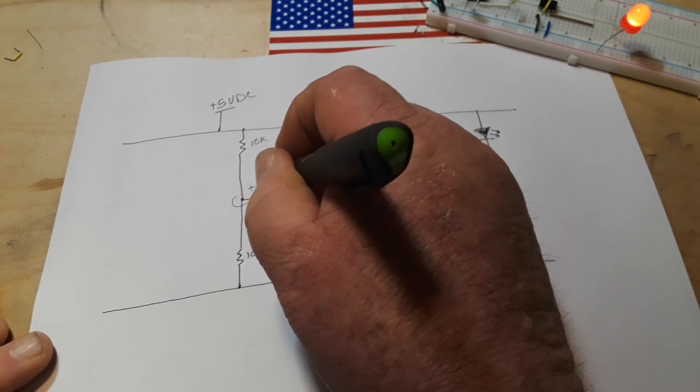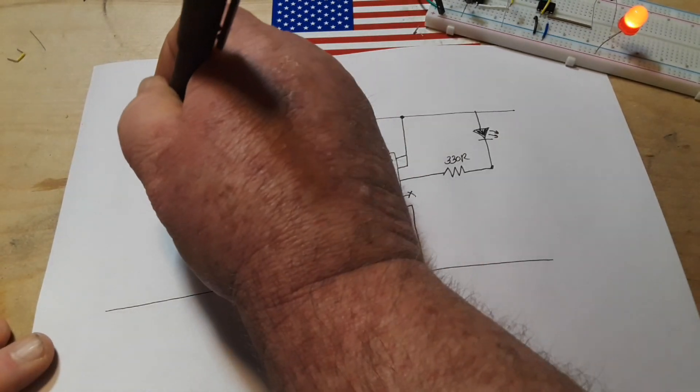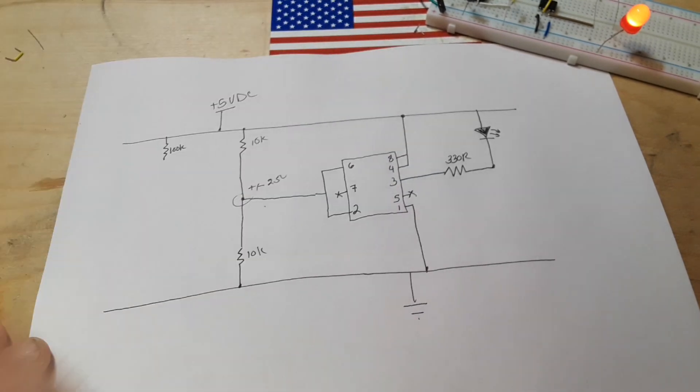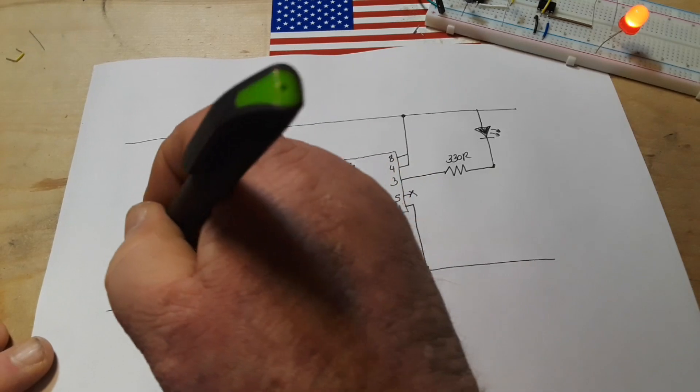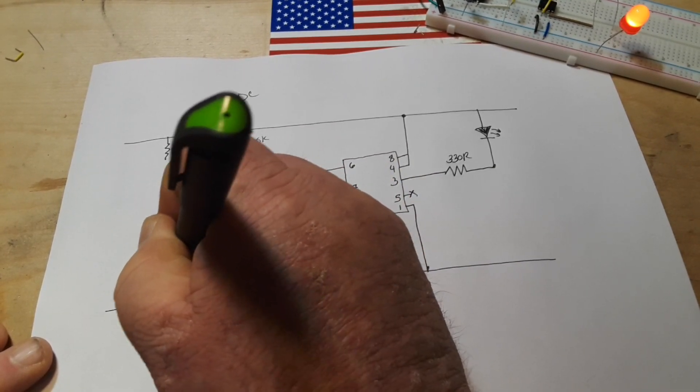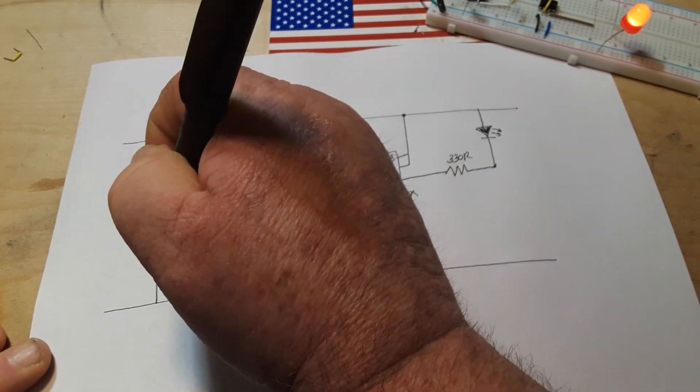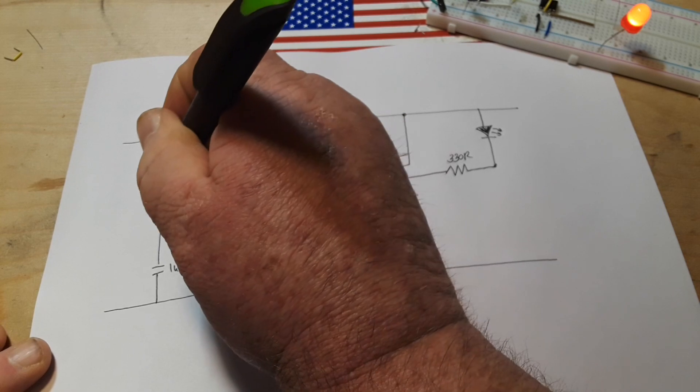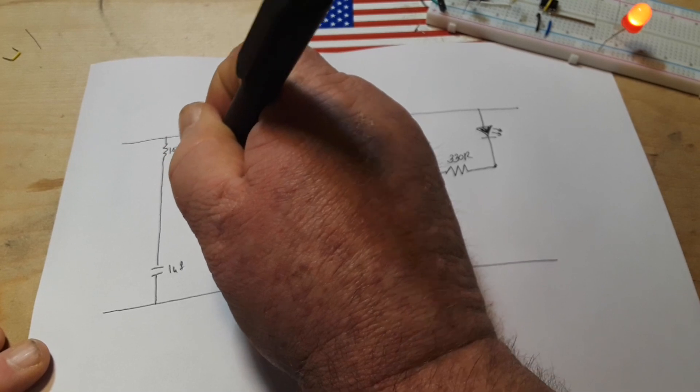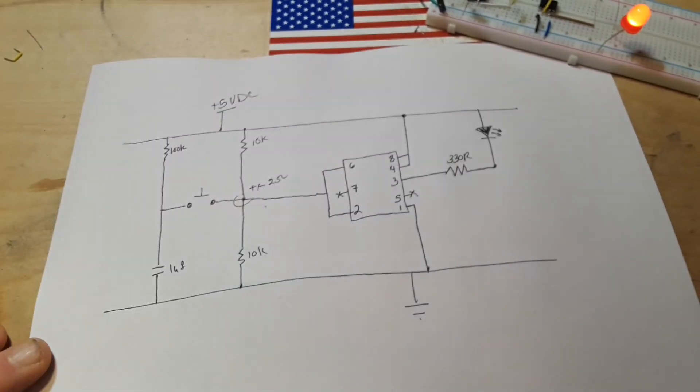So then we're going to take another resistor - in this case it can be 100k just to keep things calm - and then a capacitor, 1 microfarad, something like that. And then we're going to put our switch right here, just like that.